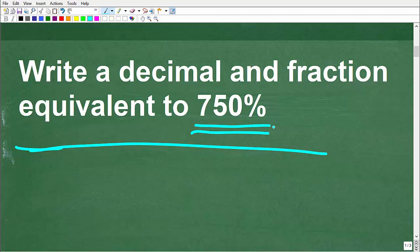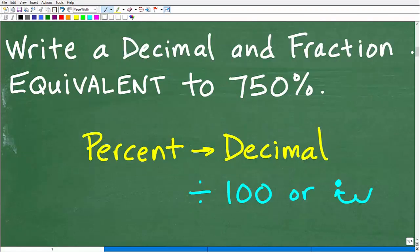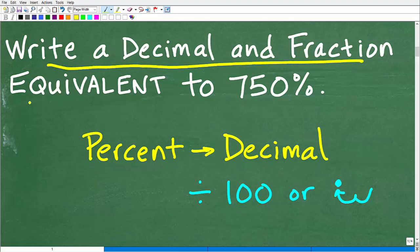Once again, we want to write a decimal and a fraction equivalent to 750%. Let's take a look at the problem again. It says write a decimal and a fraction that's equivalent. Now what's this word mean? It means mathematically the value is equal to 750%.